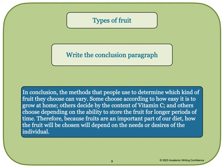Finally, we'll write our conclusion paragraph. We might write something like this: 'In conclusion, the methods that people use to determine which kind of fruit they choose can vary. Some choose according to how easy it is to grow at home. Others decide by the content of vitamin C. And others choose depending on the ability to store the fruit for longer periods of time. Therefore, because fruits are an important part of our diet, how the food will be chosen will depend on the needs or desires of the individual.'